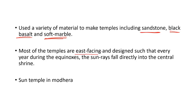Another unique feature is that most temples face eastward. The temples are designed so that during the equinox — which occurs on 22nd March and 23rd September — when the sun is exactly vertical over the earth, the sun rays fall directly and vertically on the Garbhagraha. This solar alignment is one of the most distinctive features of the Solanki style of temple architecture.